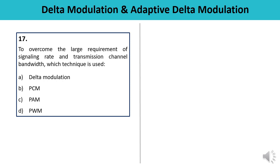Question 17: To overcome the large requirement of signaling rate and transmission channel bandwidth, which technique is used? These are the drawbacks of PCM. The technique used to overcome them is Delta Modulation. So the answer is A.